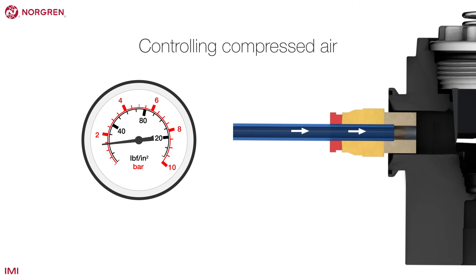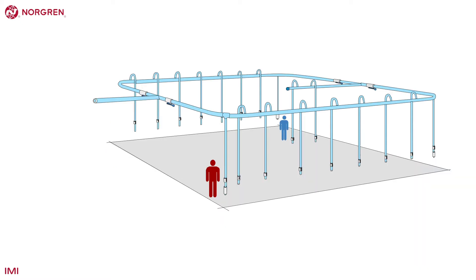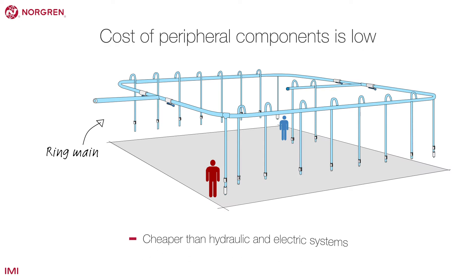Compressed air can be controlled in two ways: pressure and flow, and if it's done correctly without affecting one another. Once the ring main has been installed the relative cost of peripheral components is low especially when compared to hydraulic and electric alternatives.